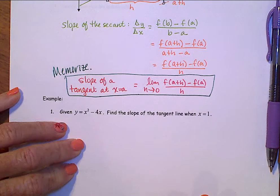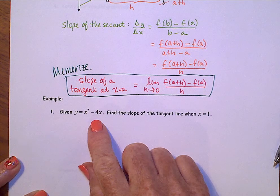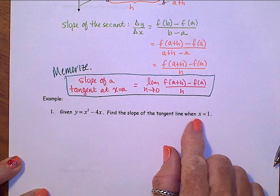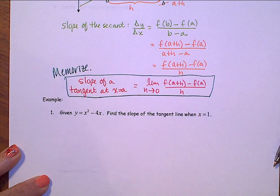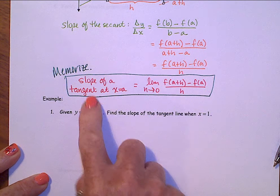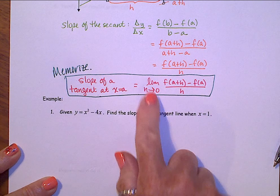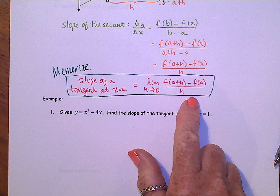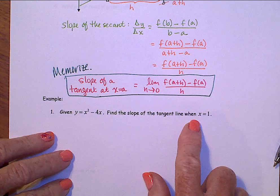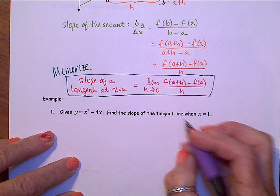Let's take a look at an example. Given y equals x squared minus 4x, I want you to find the slope of the tangent line when x is equal to 1. Here's the equation that will find you the slope of the tangent line right here. The limit as h approaches 0, f of a plus h, minus f of a all over h. So for this problem, find the slope of the tangent line when x equals 1. This is your a value.